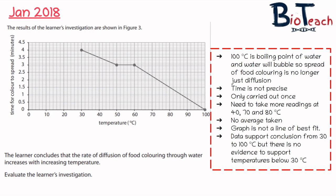The learner concluded that the rate of diffusion of food colouring through water increases with increasing temperature. To some extent this is supported by the data from 30 to 100°C, but there's no evidence for any temperatures below 30°C. Given the issues with data collection — including the boiling point problem — it's difficult to fully say the data supports the conclusion.